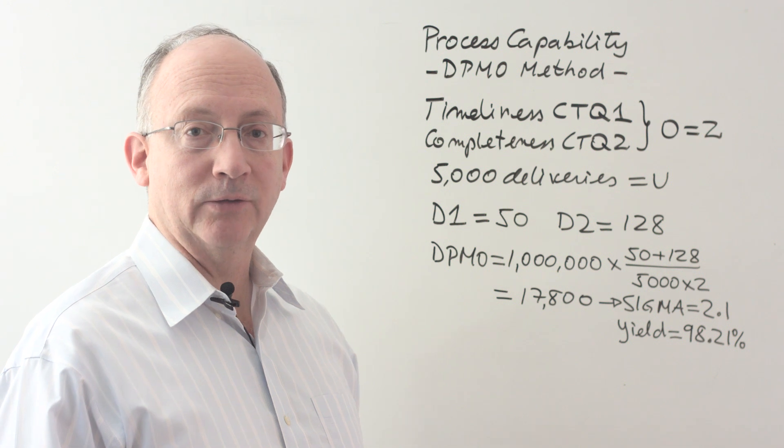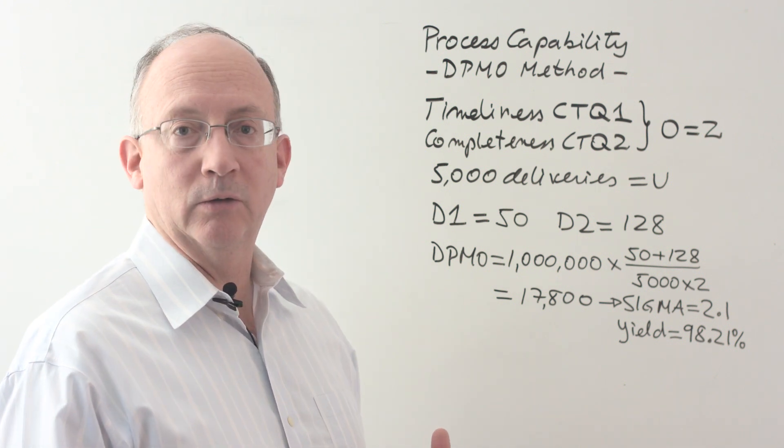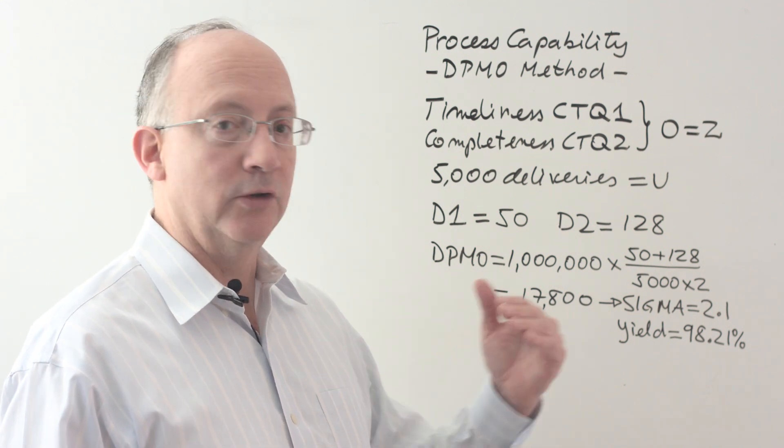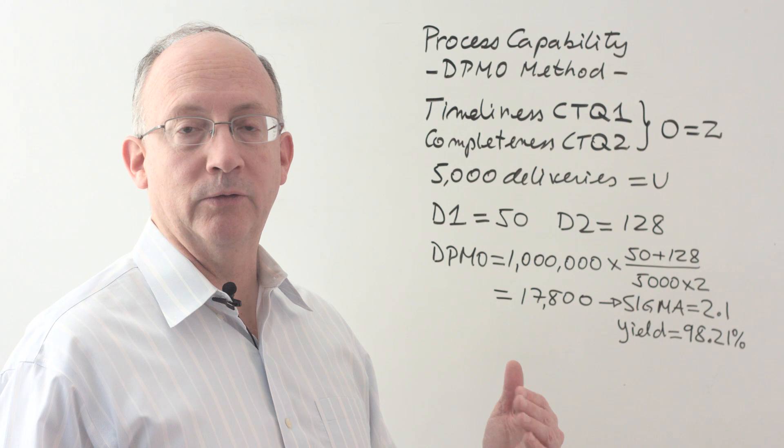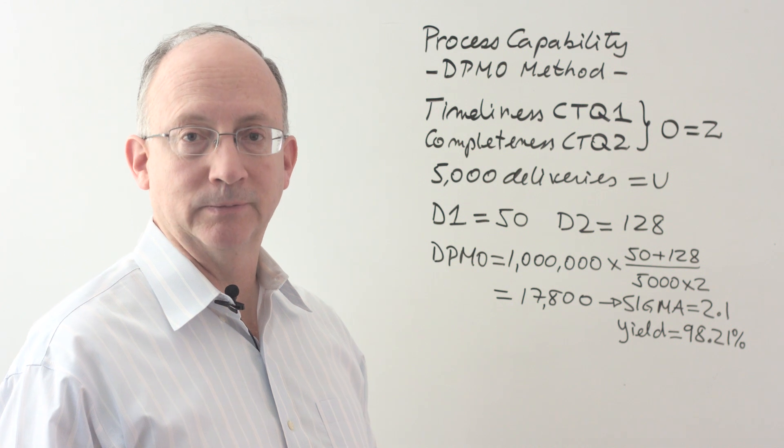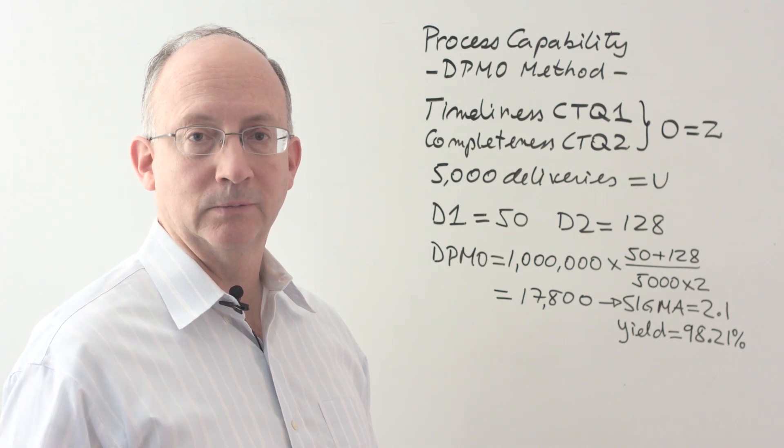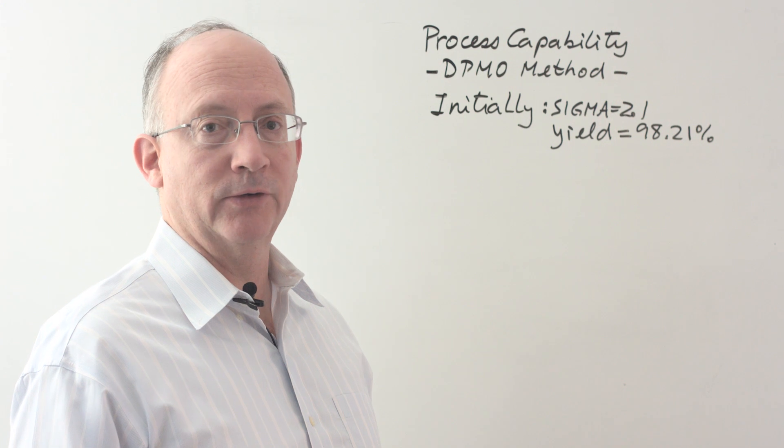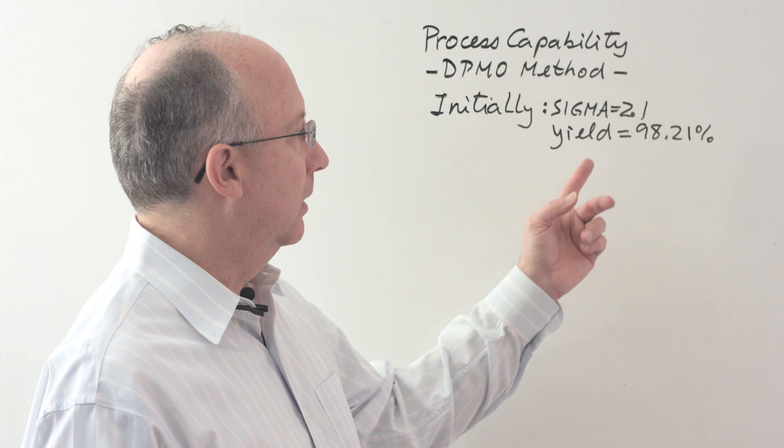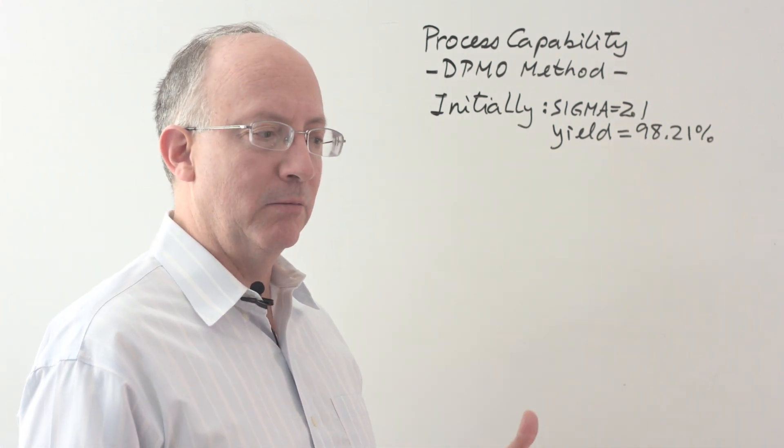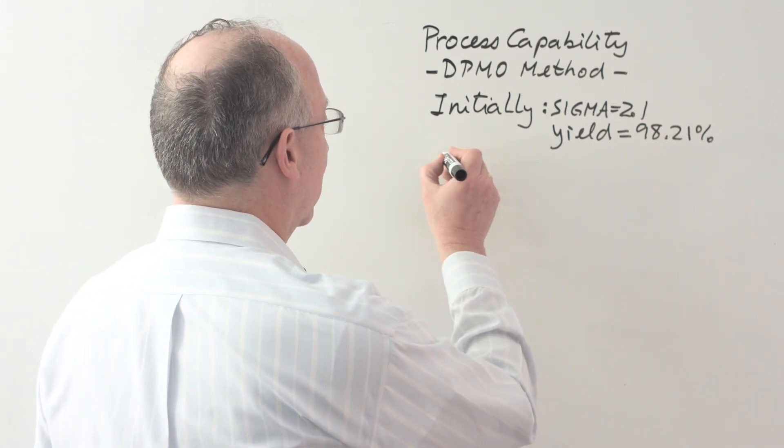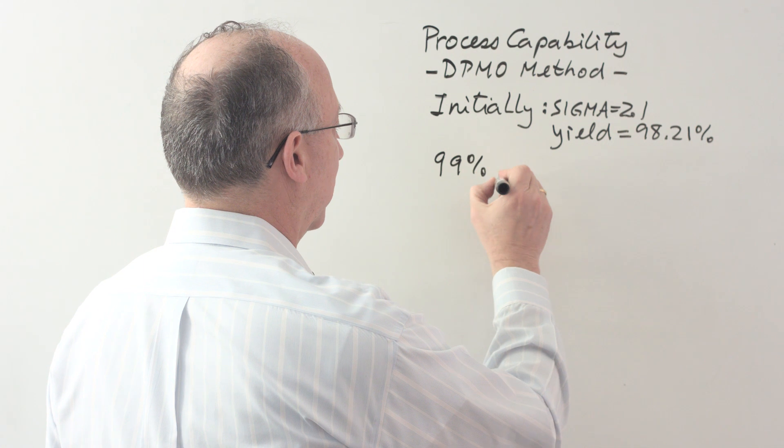What we're going to be calculating next will be instances where you can use a formula in a slightly different way, such as setting a certain target for maximum number of defectives, and also maybe setting a target for a desired level of sigma. From the initial situation, we could give ourselves the following problem. Would it be possible to achieve a yield of 99%, but by only reducing the number of incomplete orders?